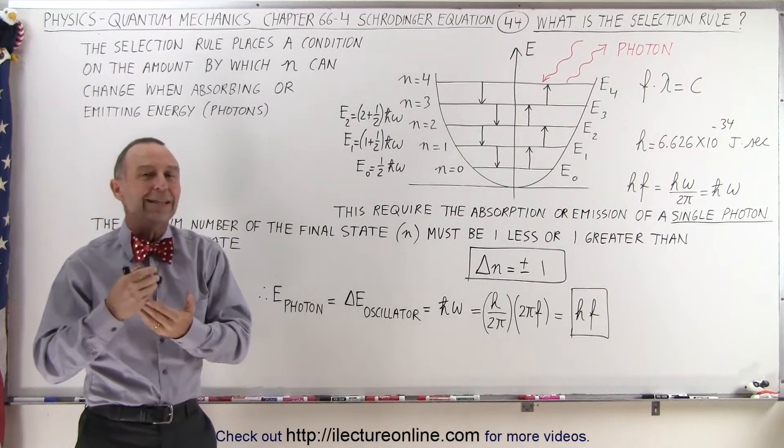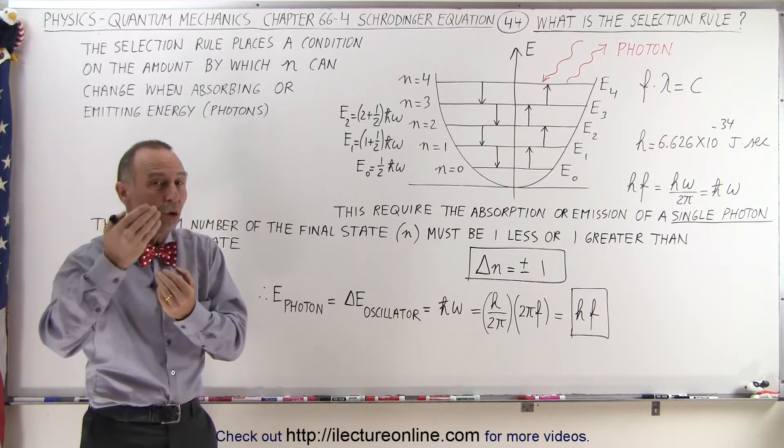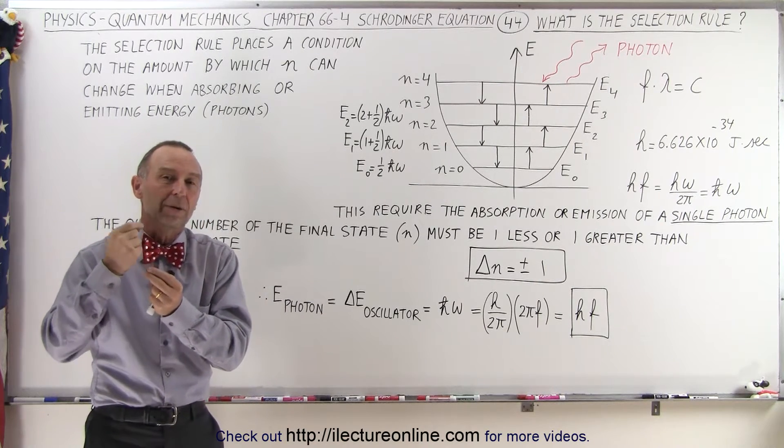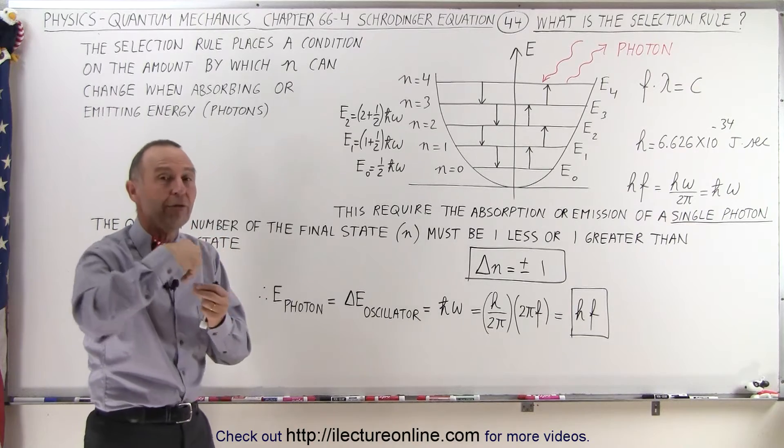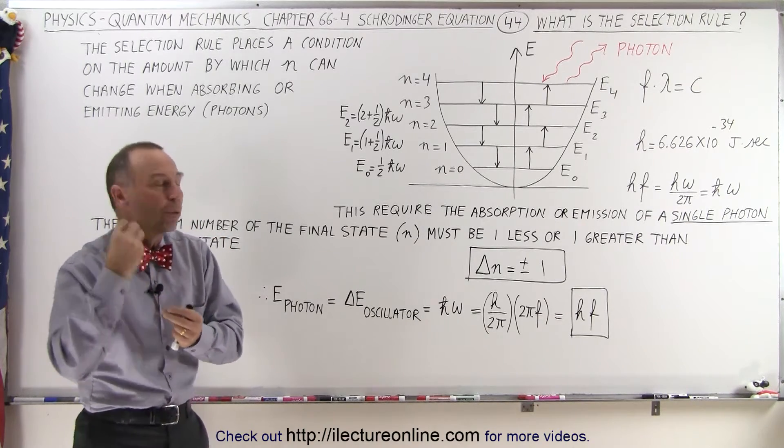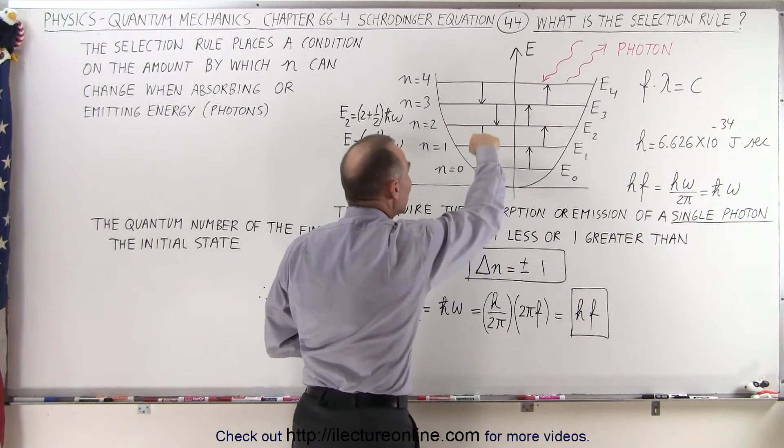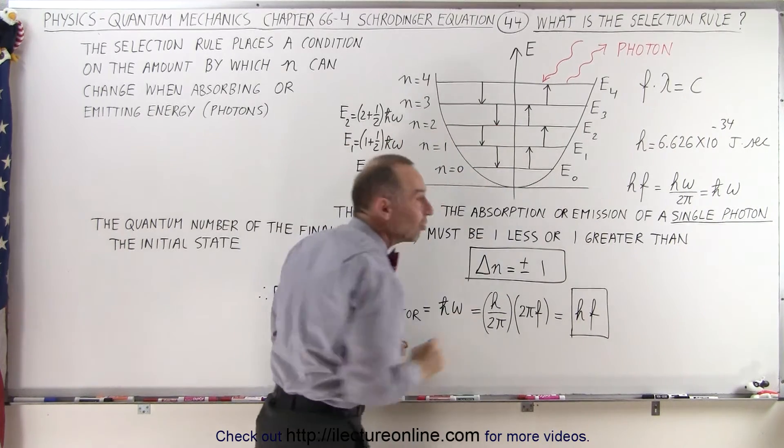In other words, Δn can only be one—one more or one less than when you started with. The amount of energy a harmonic oscillator can absorb is equal to a photon with the energy equivalent of the difference between two adjacent states.